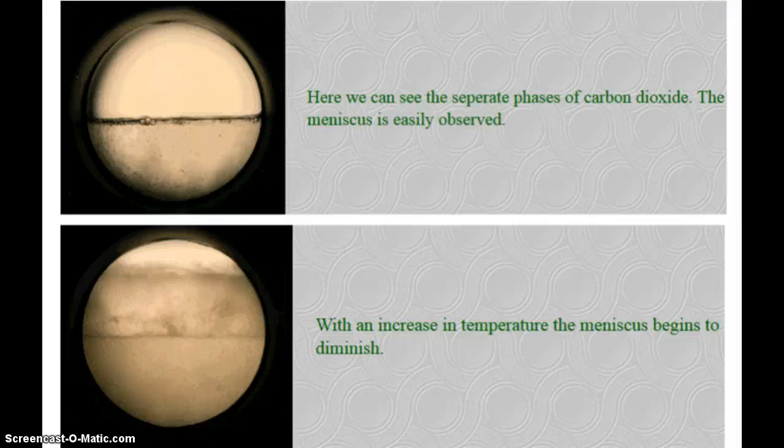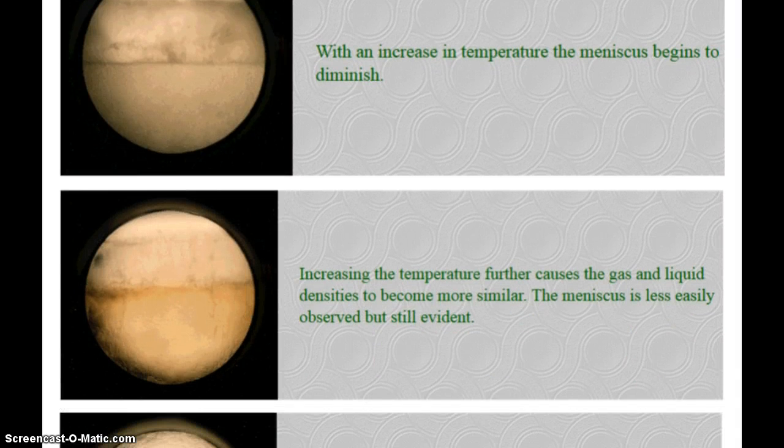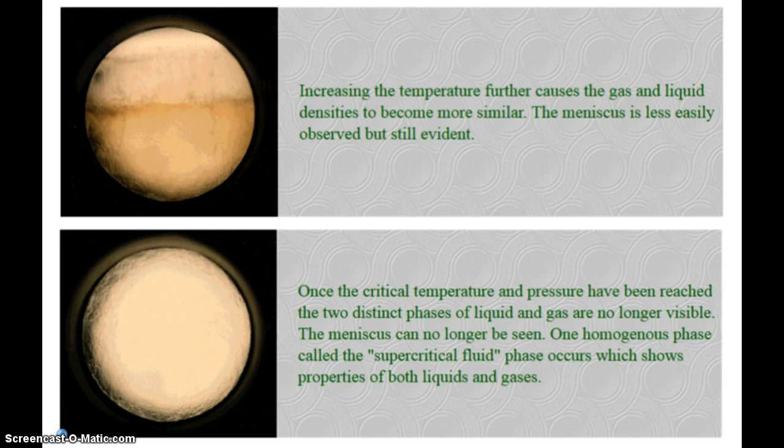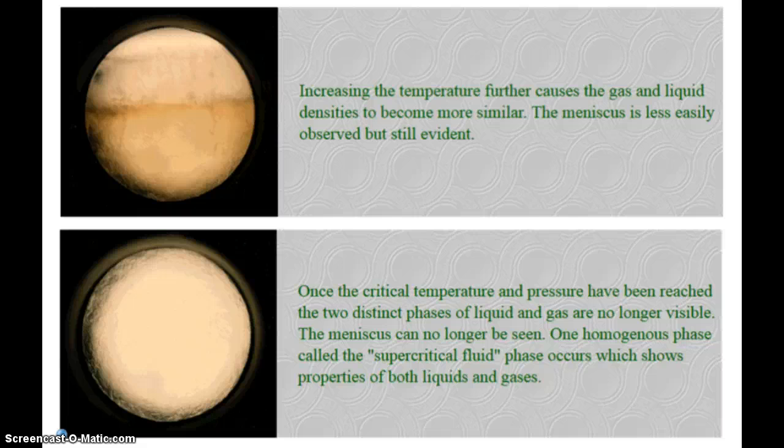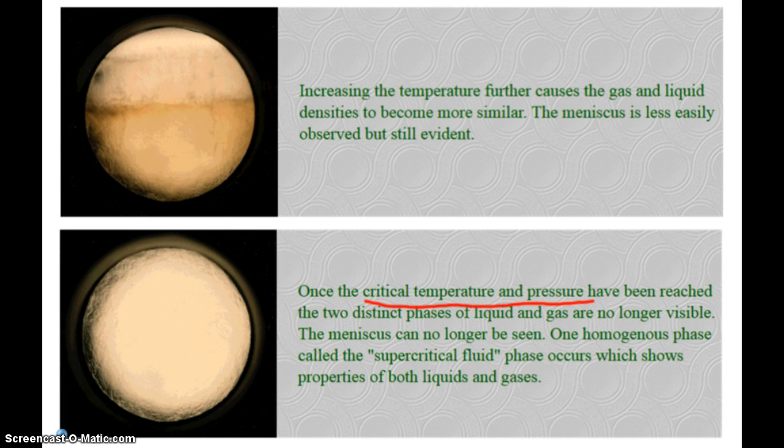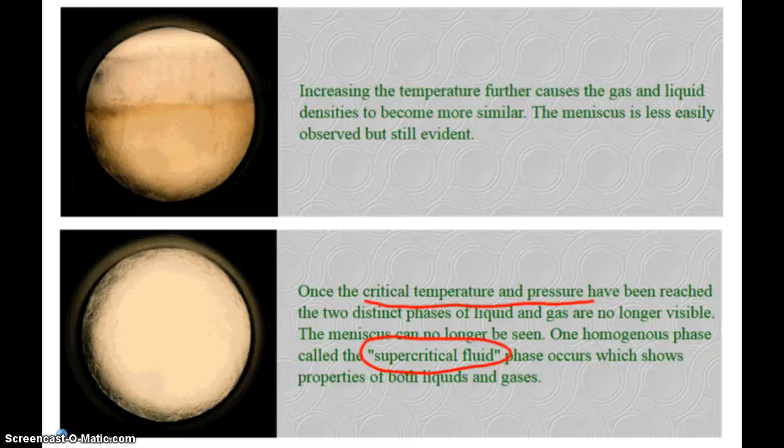As the temperature increases, the meniscus starts to diminish. Blurred lines. Increasing the temperature further causes the gas and liquid densities to become more similar. The meniscus is less easily observed. And then all of a sudden, once the critical temperature and pressure have been reached, the two distinct phases are no longer visible, and we have the supercritical fluid. This is a fantastic solvent, so we're looking to use supercritical carbon dioxide to do a lot more things that some pretty serious organic solvents had to do in the past.